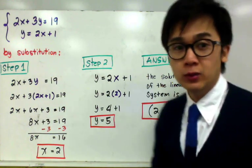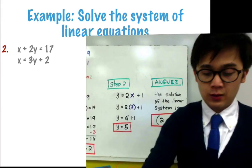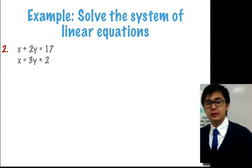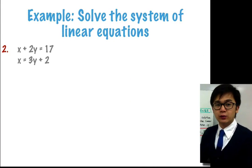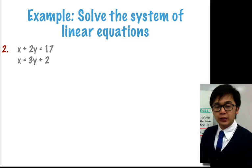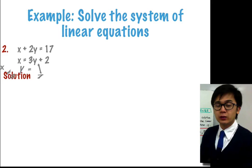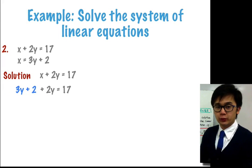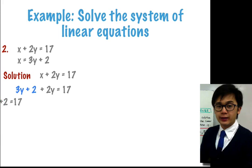For our second example, we have a new linear system: x plus 2y is equal to 17, and x is equal to 3y plus 2. Since x is already by itself, for our first step we use x plus 2y is equal to 17 and replace x by 3y plus 2. Simplifying, we combine 3y and 2y, leaving us with 5y plus 2 equal to 17.